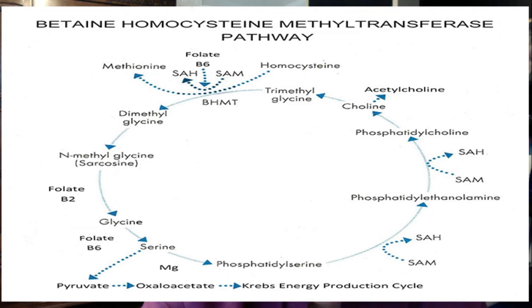You can see there that trimethylglycine becomes dimethylglycine. Trimethylglycine has given a methyl group to homocysteine and become dimethylglycine. One of the reasons why I wanted to show you this pathway is because you've heard of sarcosine — which is down at nine o'clock — and glycine and serine and phosphatidylserine, if you have been working on this pathway.